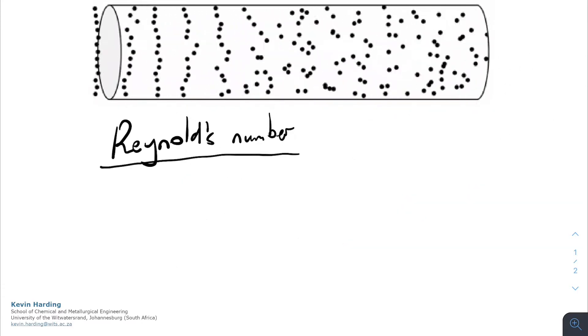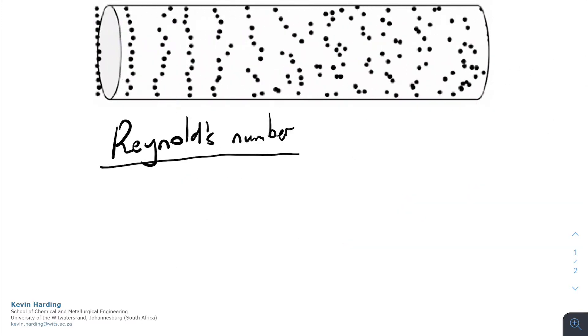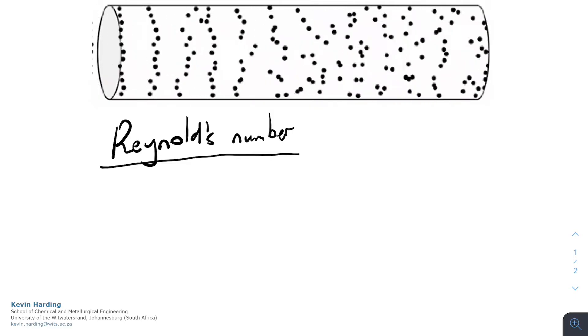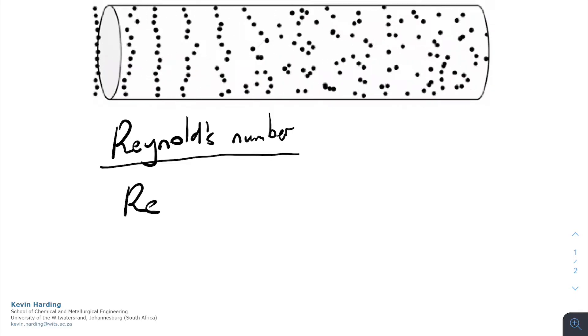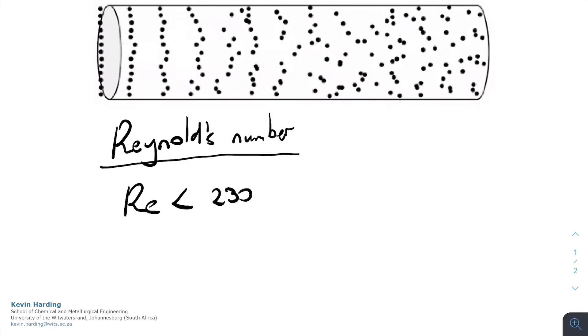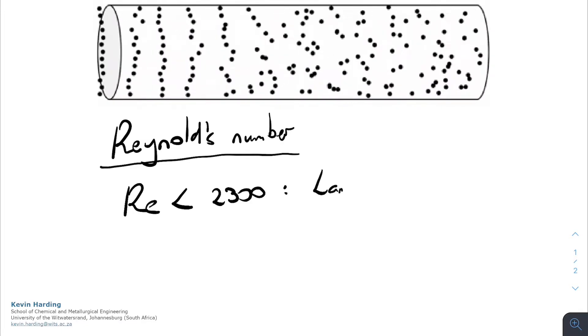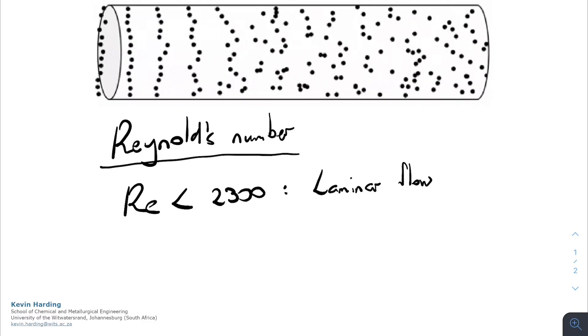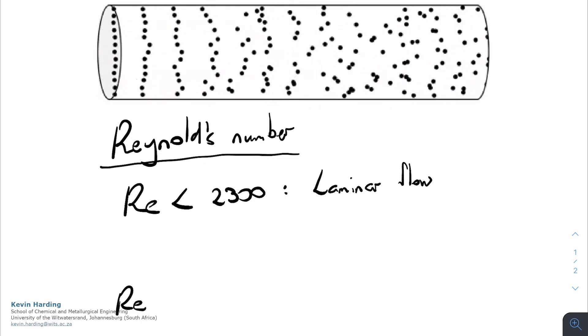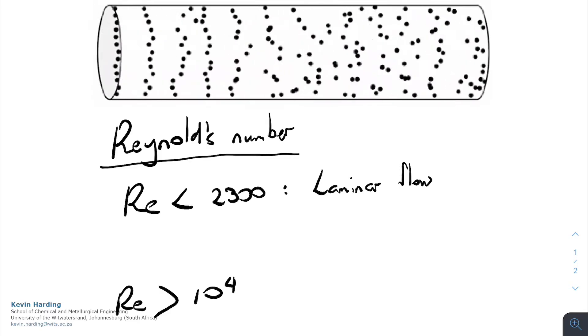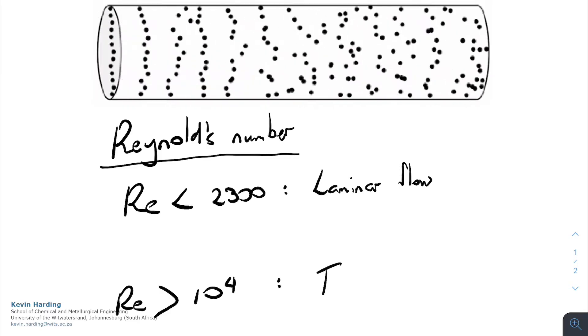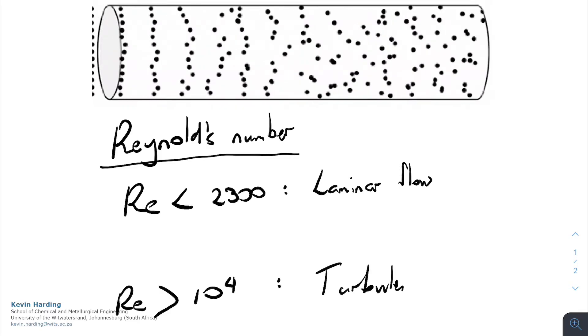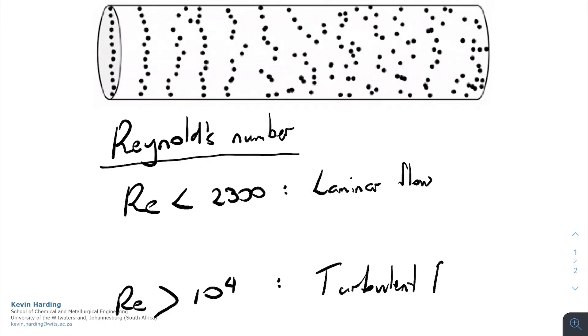So once you've calculated the Reynolds number, you'll find it's often in the thousands. And if the Reynolds number is a value which is less than 2300, we are going to define that as laminar flow. If it is a value which is greater than 10 to the 4, we are going to say that that is turbulent flow.